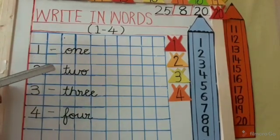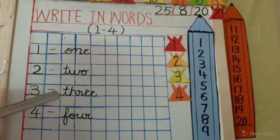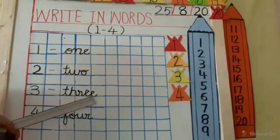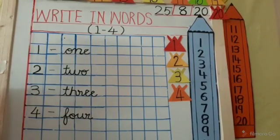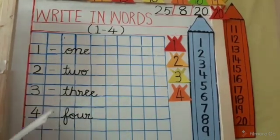O-N-E, one. T-W-O, two. T-H-R-E-E, three. F-O-U-R, four. Same way, write it down. Bye-bye. Thank you.